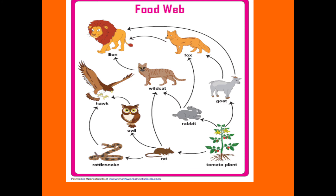Here is one of the pictures of a food web. In this diagram, there are three divisions in the plant. These are the primary consumers, secondary consumers, and tertiary consumers. Okay students, thank you. We will meet again in the next videos.